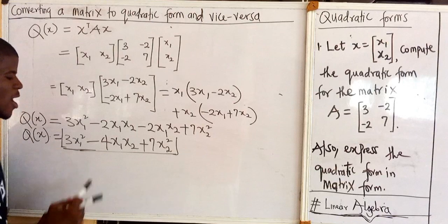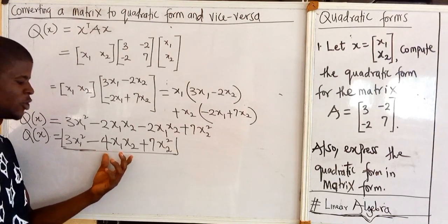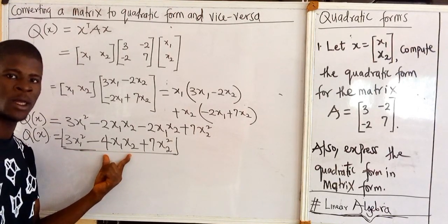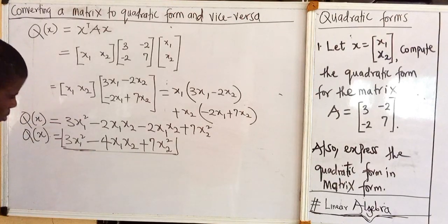Now having gotten this, let us get the matrix of this quadratic form. Let's see how we can do that. Let me quickly do that here.